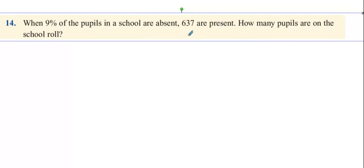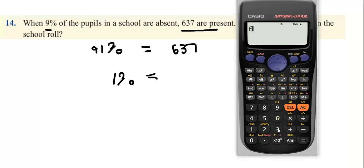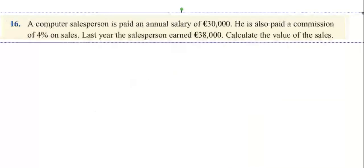Question 14: When 9% of pupils are absent, there are 673 present. If 9% are absent, 91% are in, so 91% equals 673. Find out what 1% is: 673 divided by 91 equals 7 people. The total number is 100%, so multiply 7 by 100 to get 700 students.